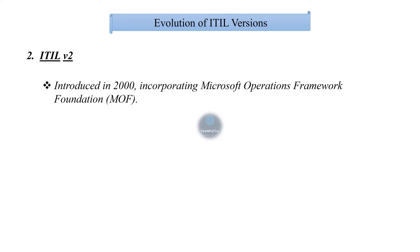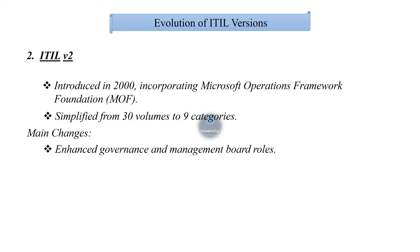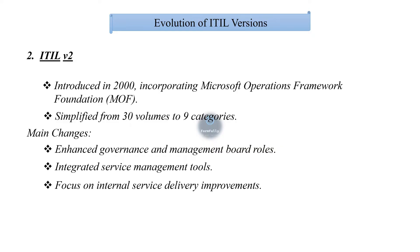The next version is ITIL v2, introduced in 2000, incorporating the Microsoft Operations Framework foundation to simplify IT from 30 volumes down to nine categories. Main changes from v1 to v2 include enhanced governance and management board roles, integrated service management tools, focus on integral service delivery improvements, and emphasis on flexible working arrangements.